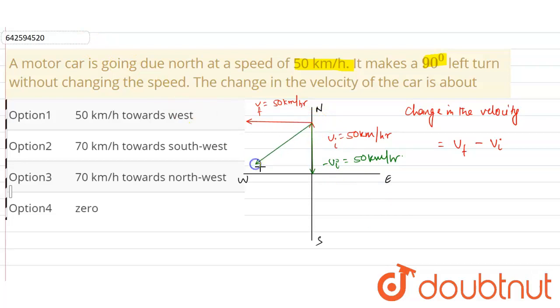Now the change in the velocity will be in the direction of west to south, correct. This will be the resultant velocity or the change in the velocity, correct, so delta V. Now the magnitude of the delta V will be given as under root of 50 square plus 50 square.